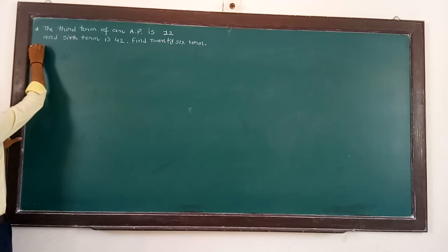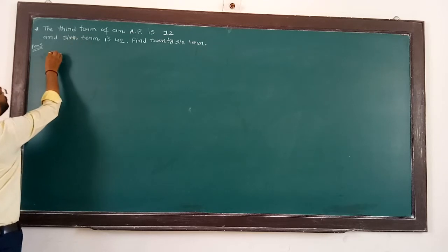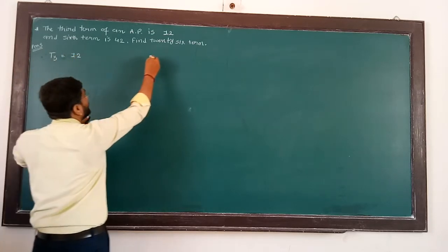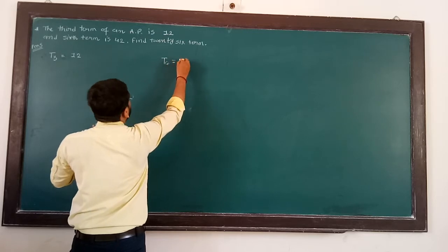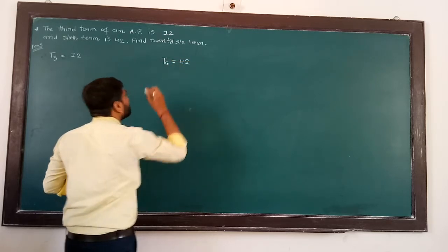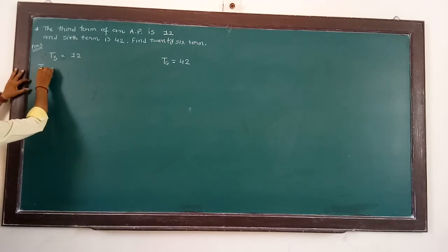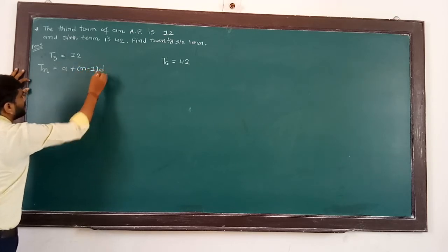So it starts from the given information. First of all, third term is 12, so we write here T3 is equal to 12. After that, sixth term, so we write here T6 is equal to 42. So Tn is equal to A plus N minus 1, D.